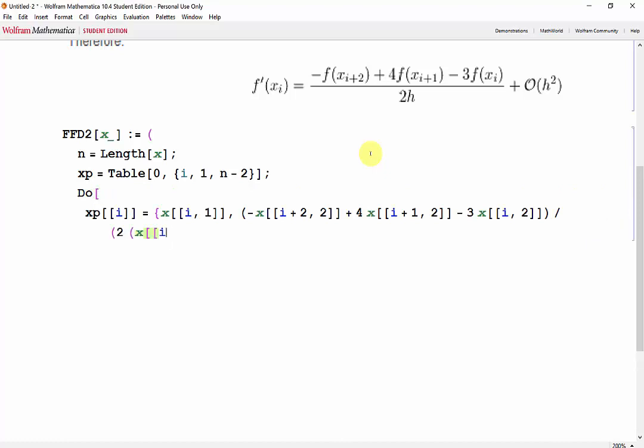Which is x of i plus 1, comma 1, minus x of i, comma 1. Then we have i going from 1 to the third last data point. And we want to output xp.